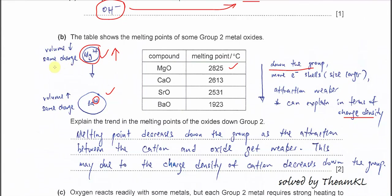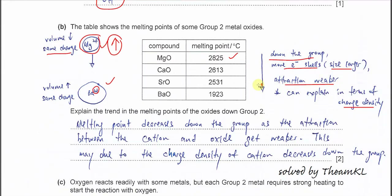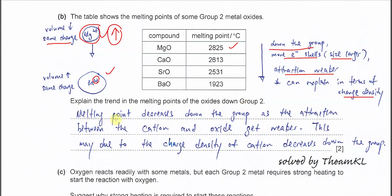Volume is smaller but the charge is the same. When the charge density is higher, the attraction of this ion to the other anion is stronger — meaning magnesium ion has a stronger attraction with the oxide, which is why its melting point is highest. Going down the group, more electron shells make the size larger, so attraction between the cations and anions becomes weaker. Melting point decreases down the group because the attraction between the Group 2 cation and the oxide gets weaker, as the charge density of the cation decreases.